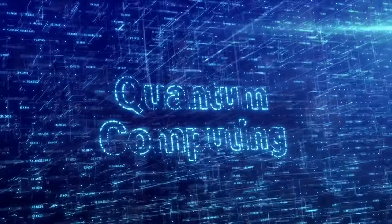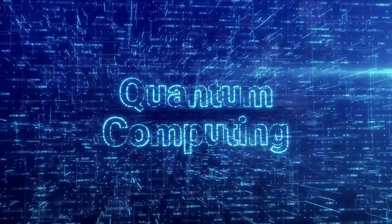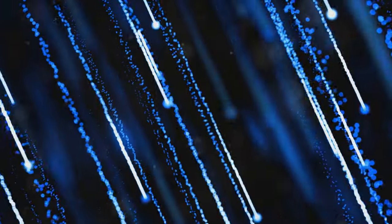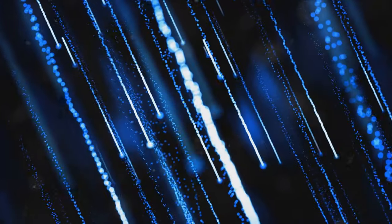Then we dived into the double-slit experiment, a classic demonstration of quantum oddity. This experiment showed us that particles like electrons and photons can behave like waves when not observed, passing through two slits simultaneously, but act like particles when we're watching, passing through one slit or the other.